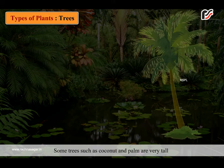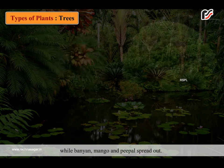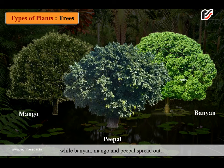Some trees such as coconut and palm are very tall, while banyan, mango and peepal spread out.